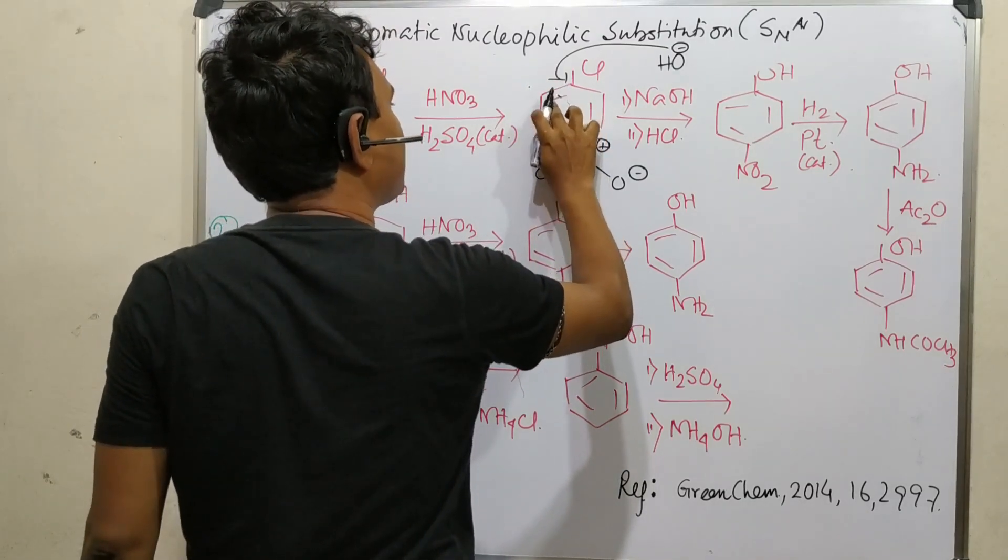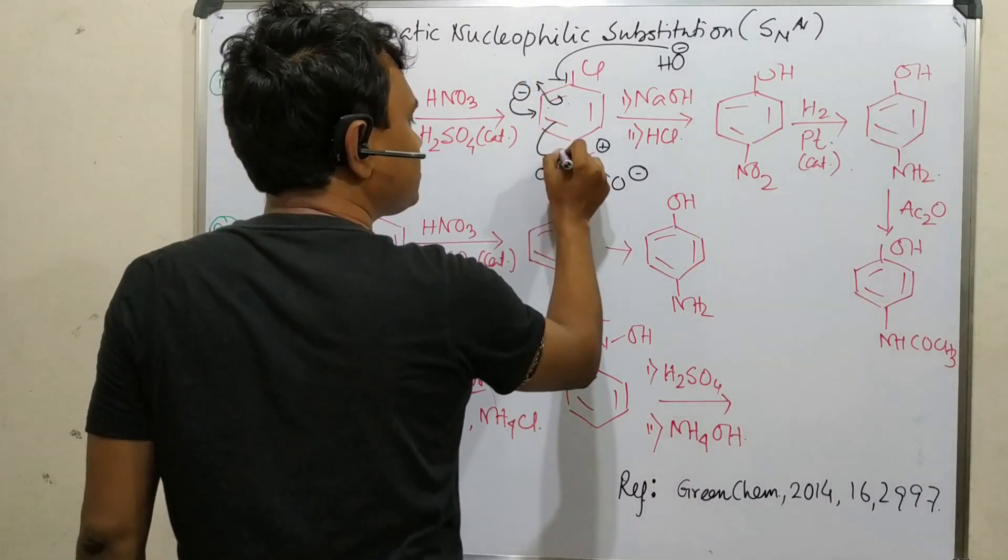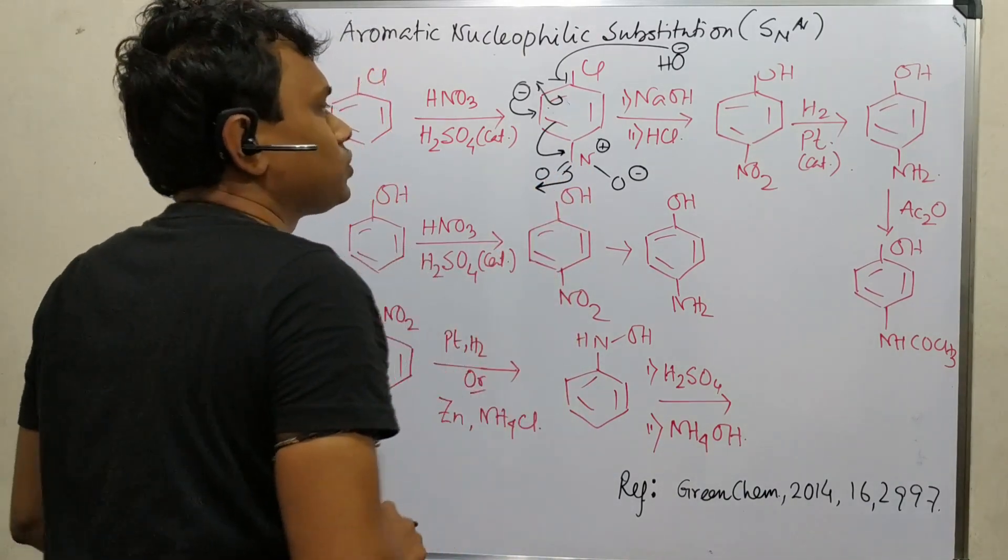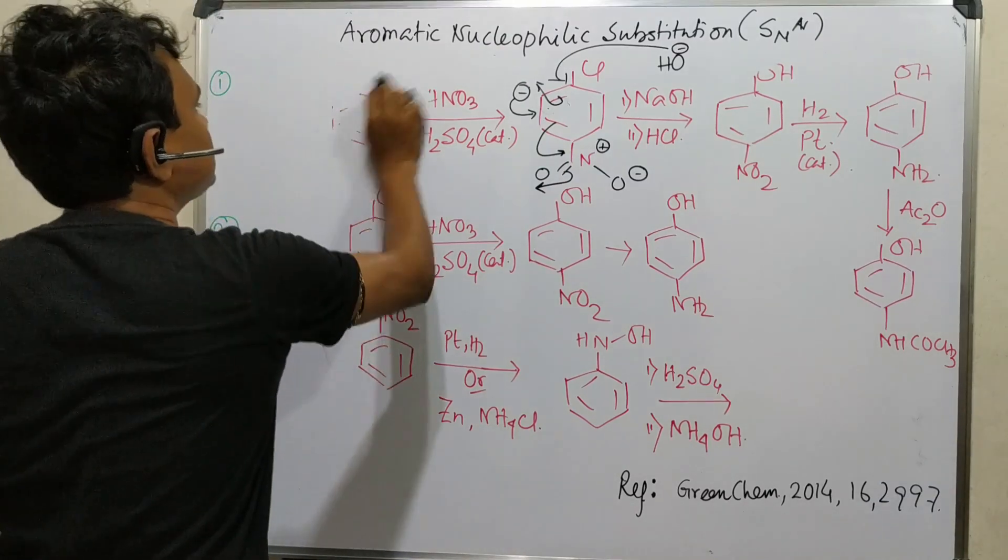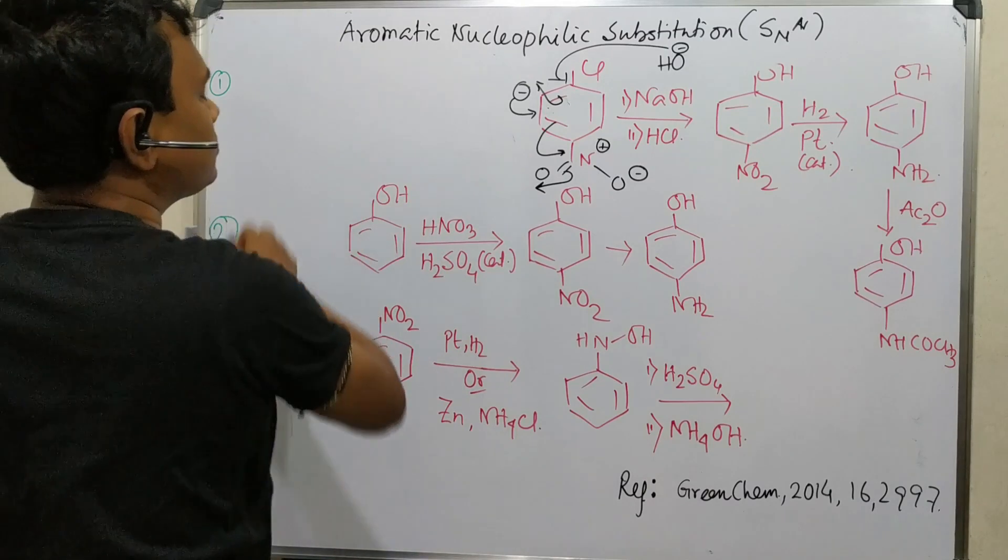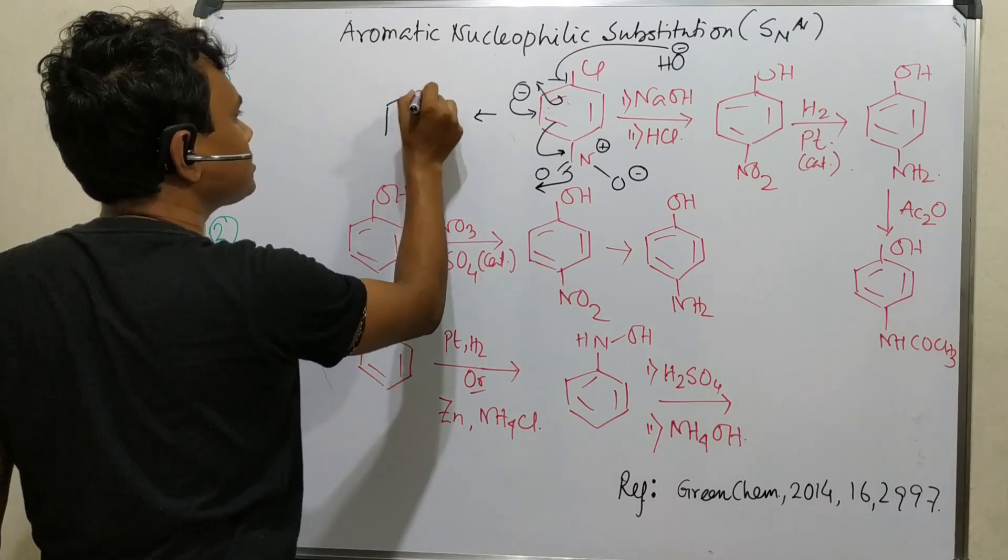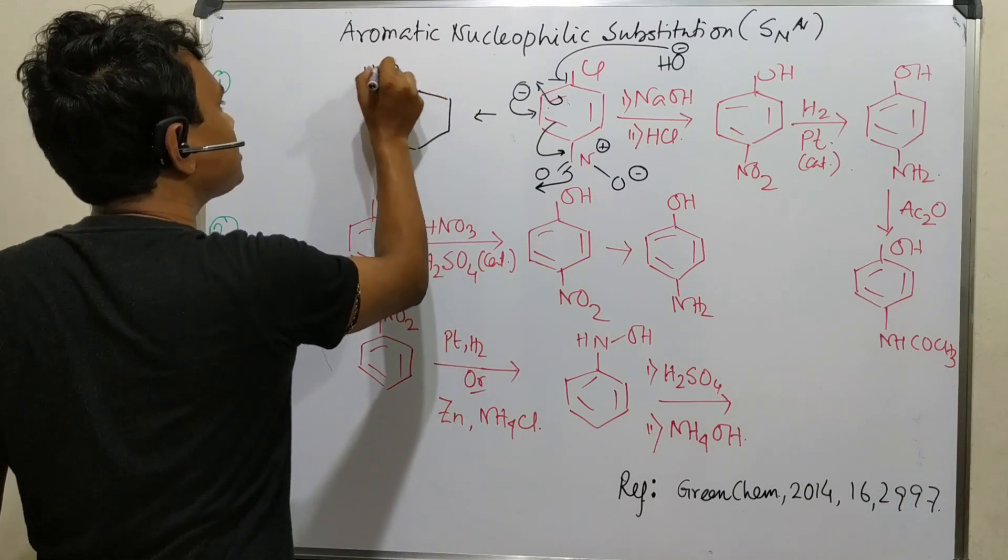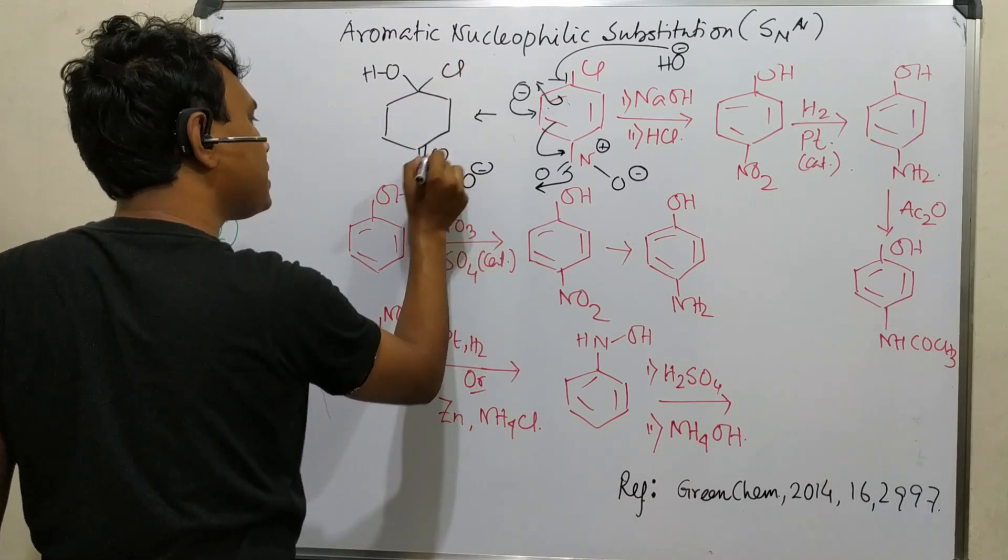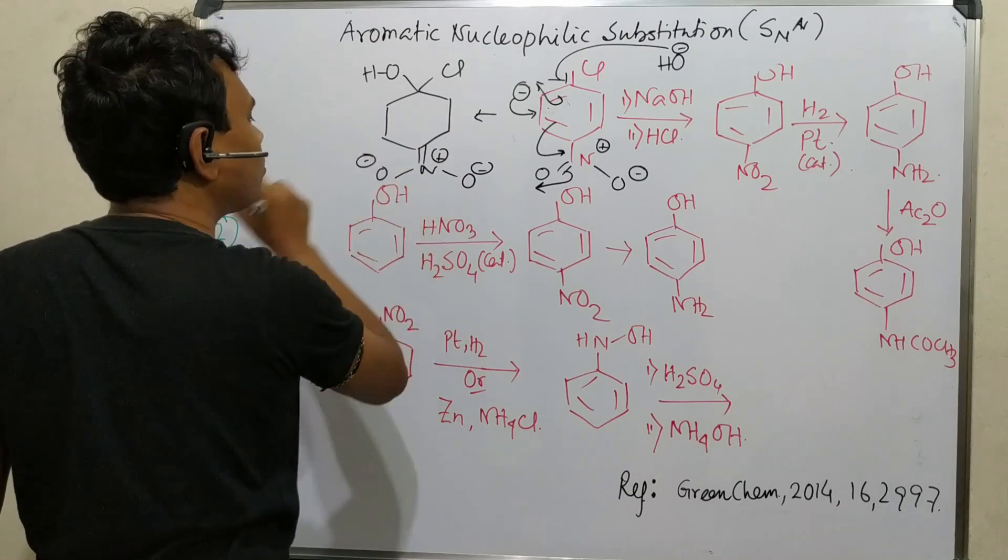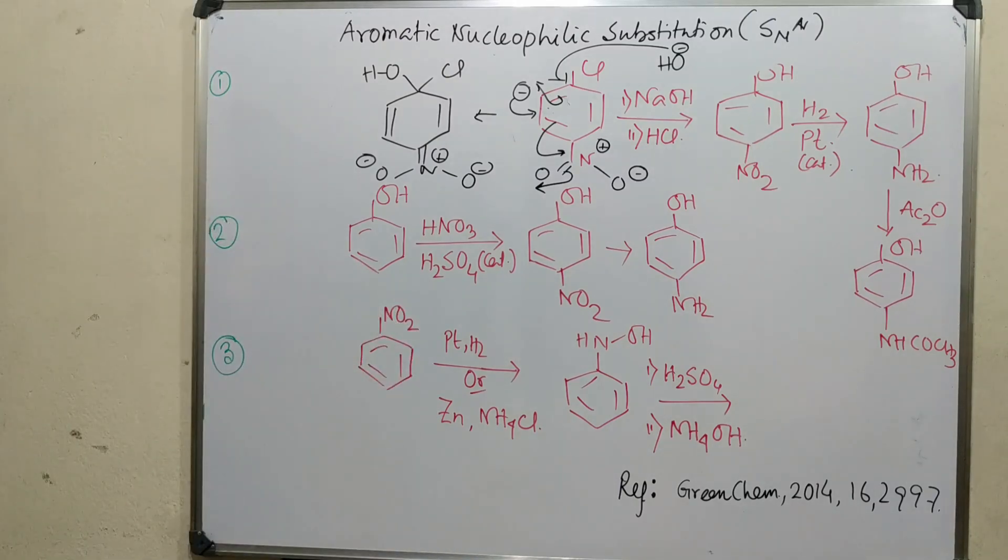Let me draw one structure. So negative charge comes here. That negative will push, so this will come here. And in this way it will open. So first it happens. And what does it produce? It produces this: OH, Cl, nitrogen O minus, nitrogen is plus, and here also O minus. So it is produced. In this way the negative charge is delocalized.